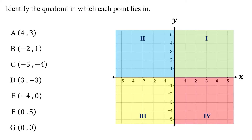Each quadrant has a distinct combination of positive and negative values for x and y-coordinates. In quadrant one, both the x and y-coordinates are positive. In quadrant two, the x-coordinate is negative and the y-coordinate is positive.